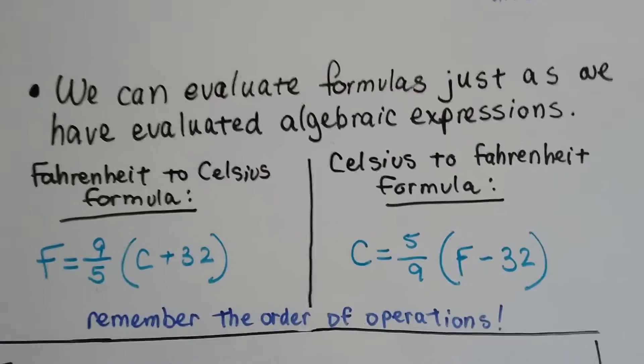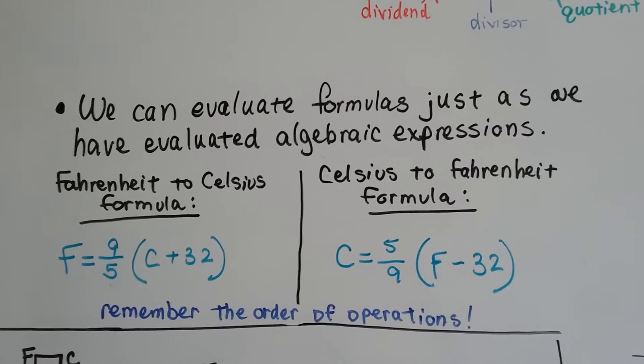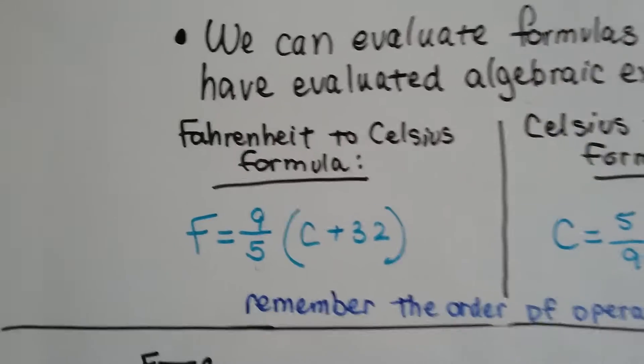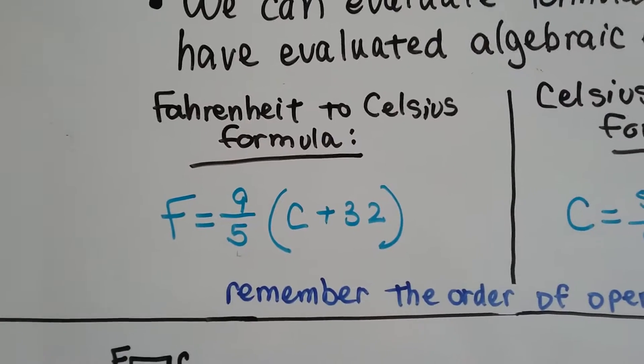We can evaluate formulas just as we've evaluated algebraic expressions. To change Fahrenheit to Celsius, this is the formula right here, F equals 9 fifths times C plus 32.